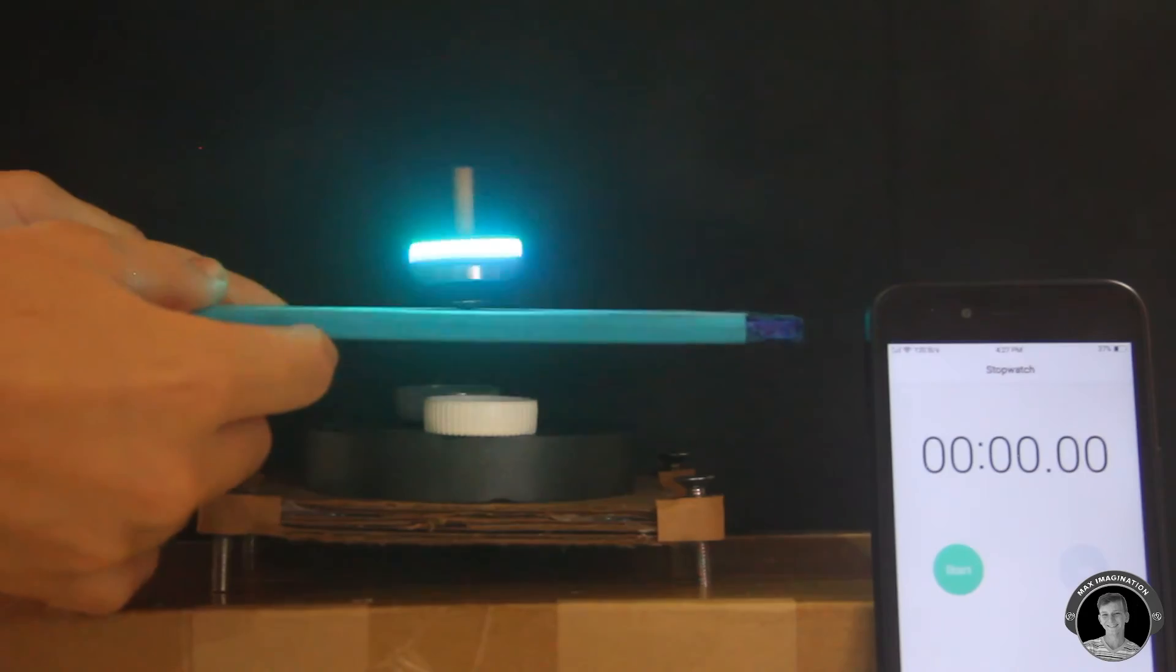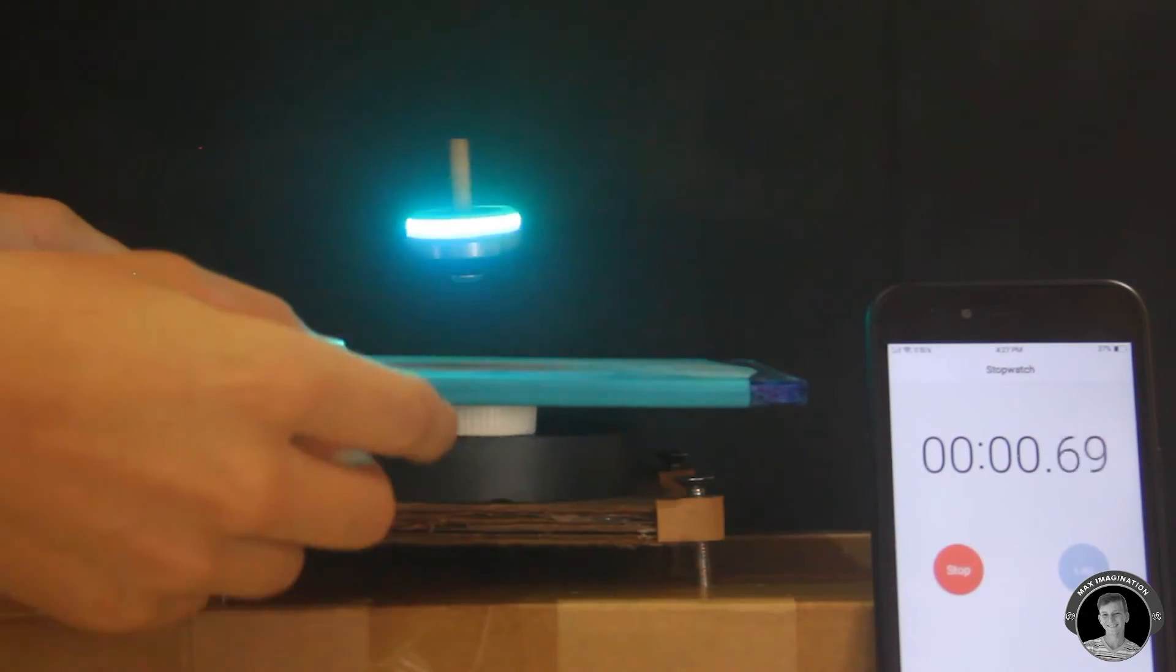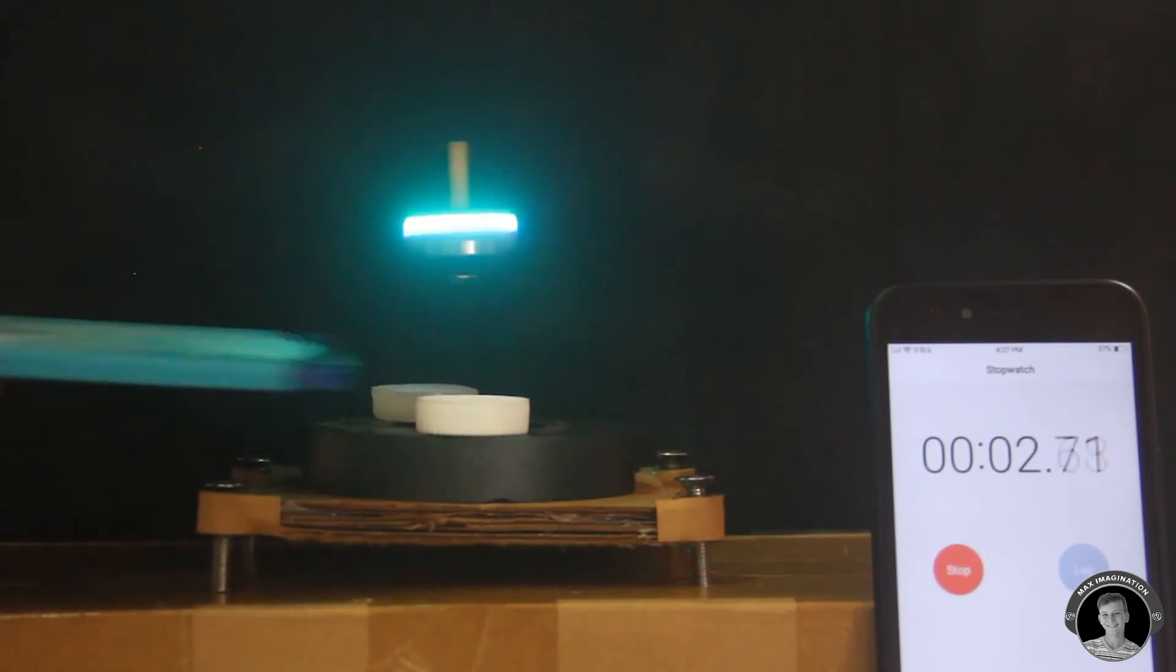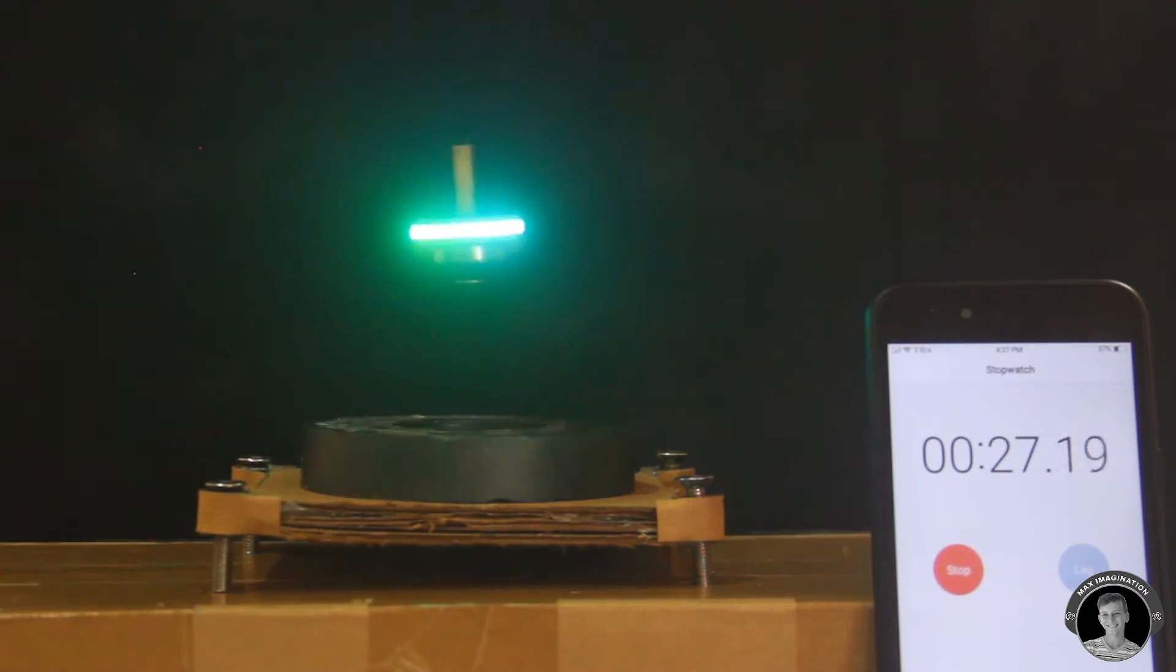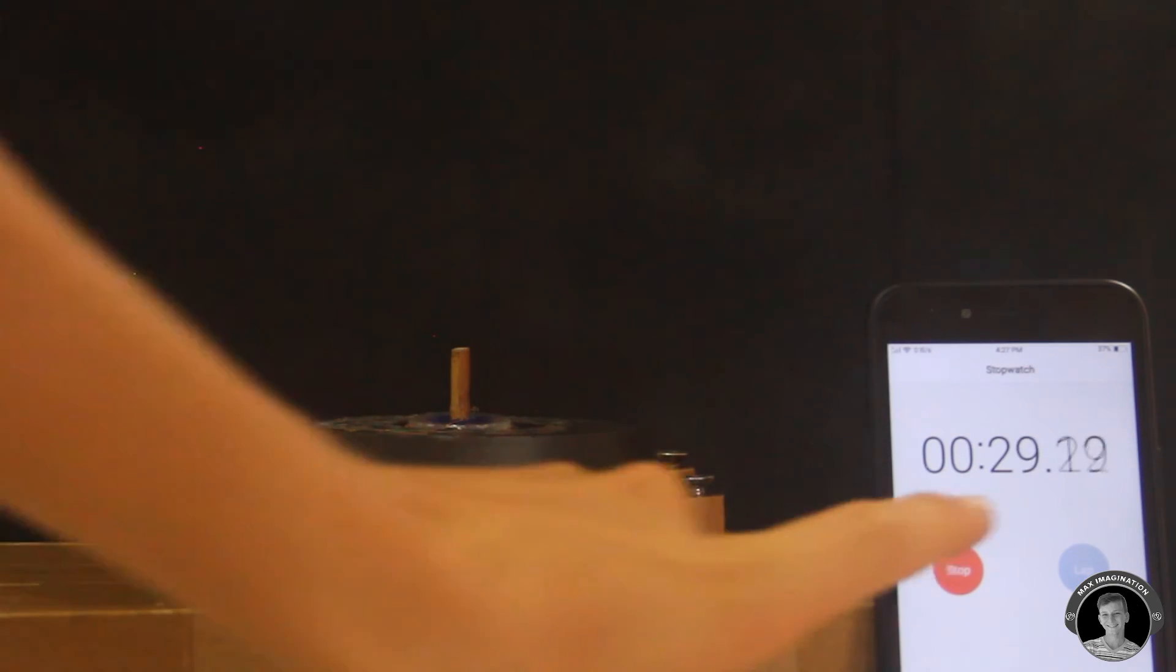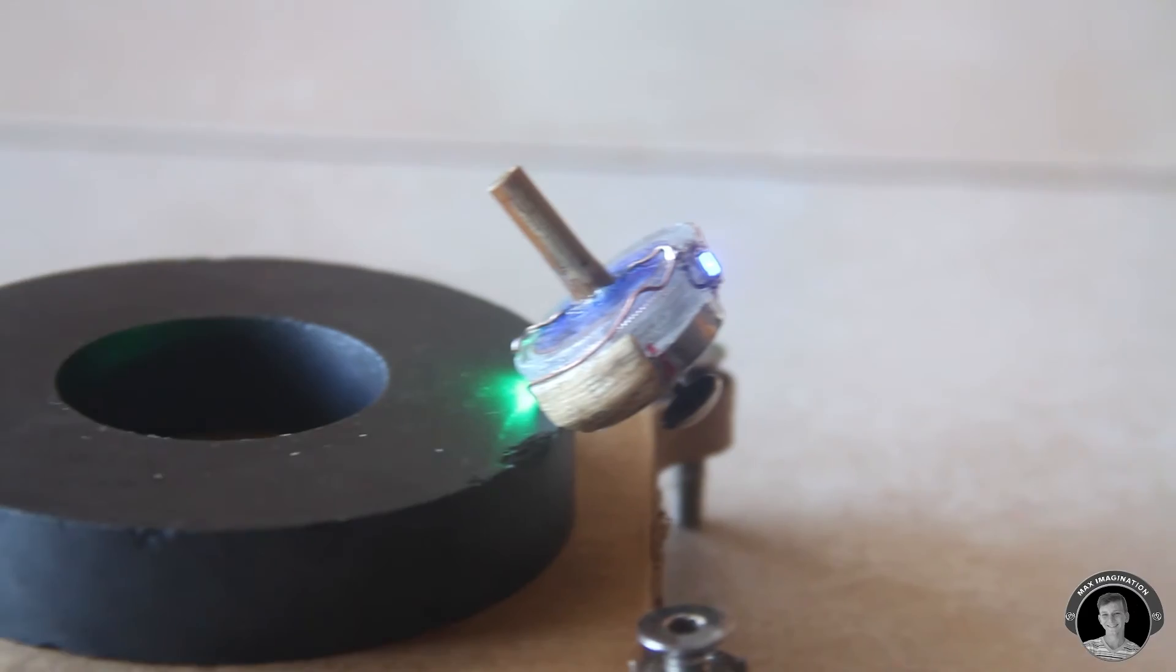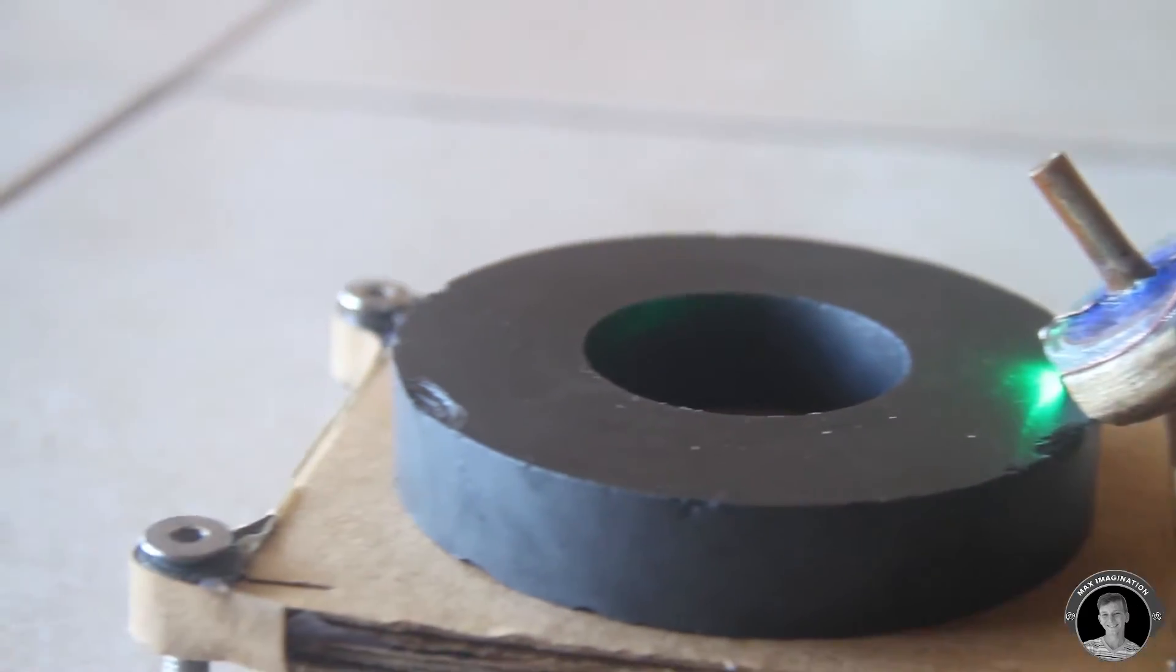I set a stopwatch to see how long can this LED Levitron really levitate for. Turns out it levitates for about 30 seconds, since making this Levitron into a really balanced one is quite the hard task, so 30 seconds isn't that bad for this kind of Levitron.